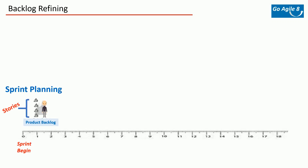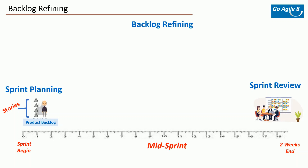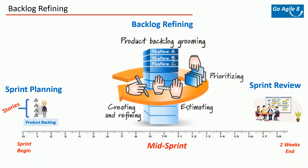In sprint planning you take certain stories, call them the sprint backlog, and deep dive into estimating them. Now imagine if you already did some refinement before coming to sprint planning — where you brainstorm the needs and prioritize to align with enterprise objectives. That's what you do in backlog refining, which you do midway in a sprint. You start a sprint with sprint planning and after about a week you meet again to go over product backlog items likely to be candidates for the upcoming sprint.